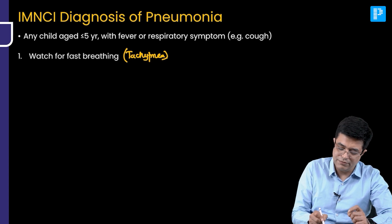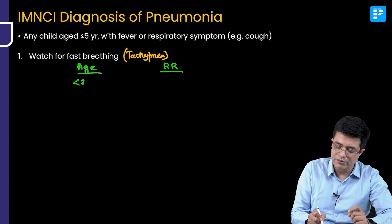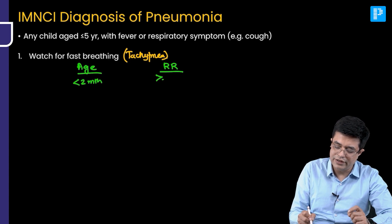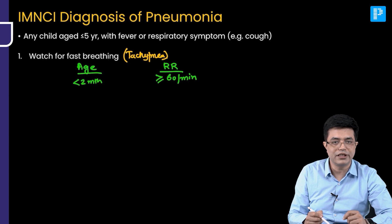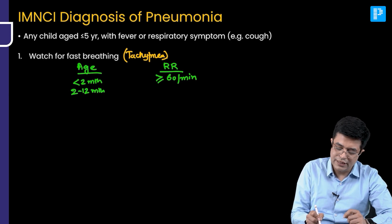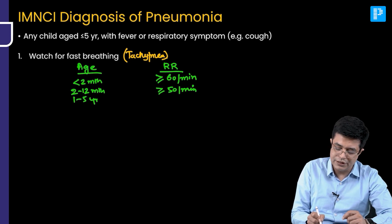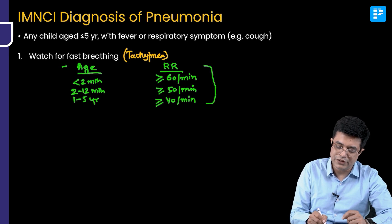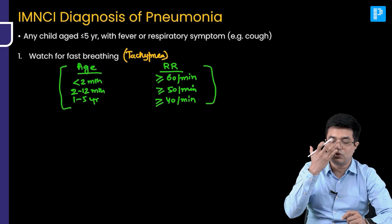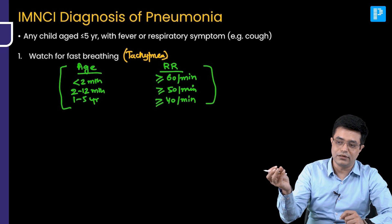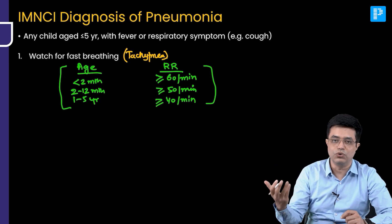There is a table to remember for tachypnea thresholds by age. For less than two months of age, a respiratory rate equal to or more than 60 per minute is tachypnea. For age 2 to 12 months, it is equal to or more than 50 per minute. For age 1 to 5 years, it is equal to or more than 40 per minute. Above 5 years of age, fast breathing correlation with pneumonia is not well defined, so we do not define it.